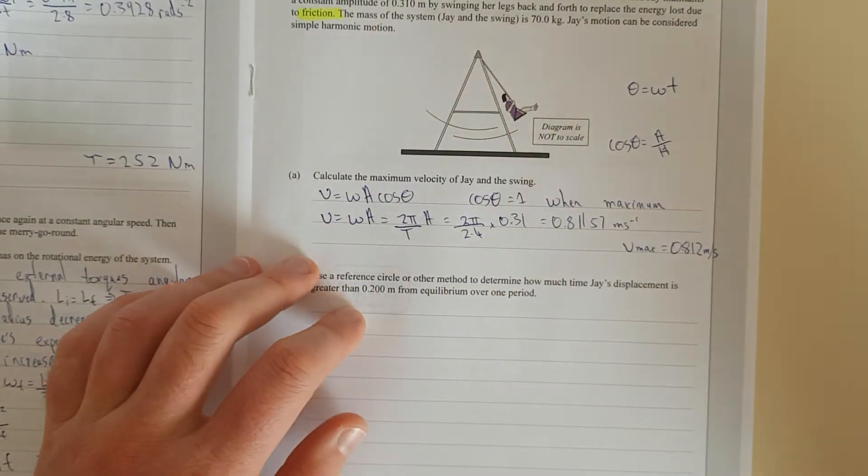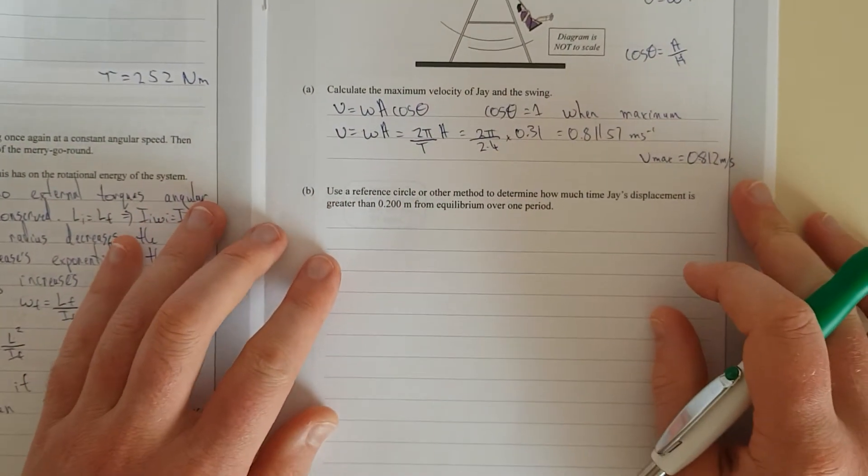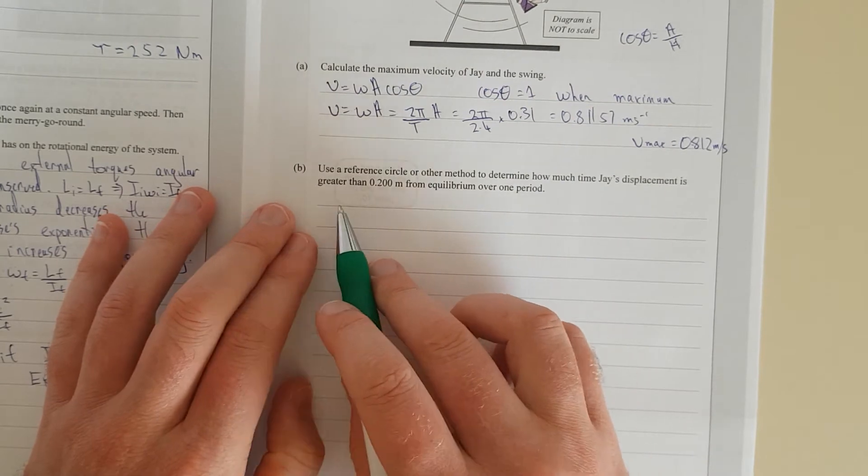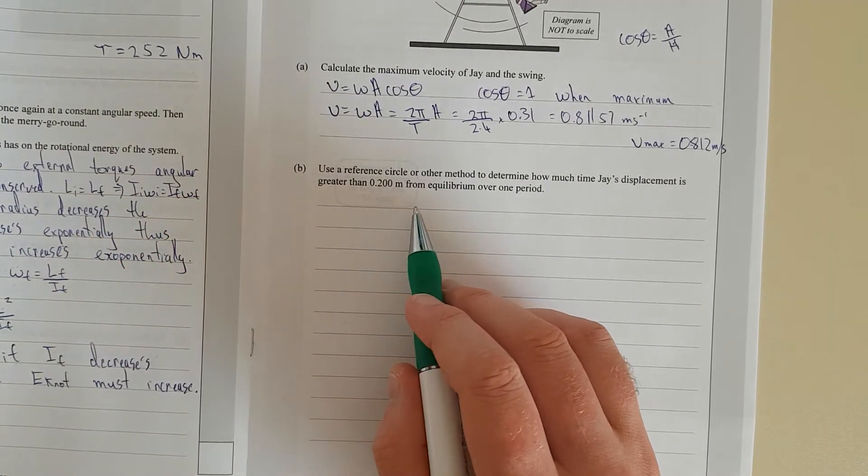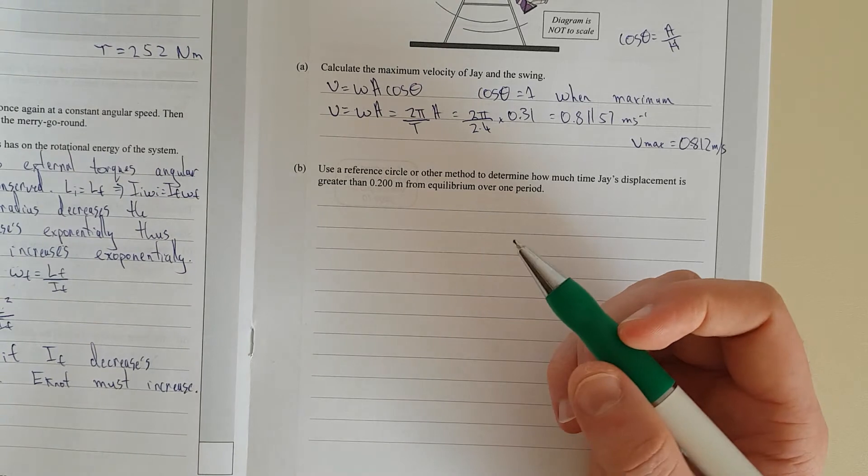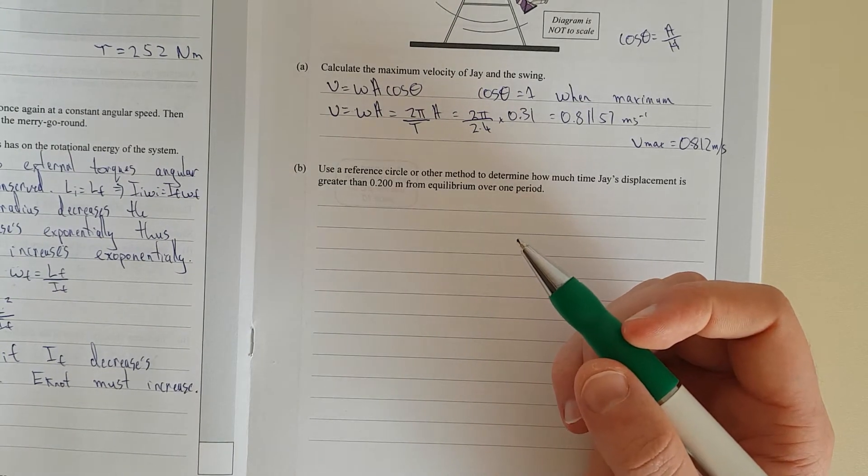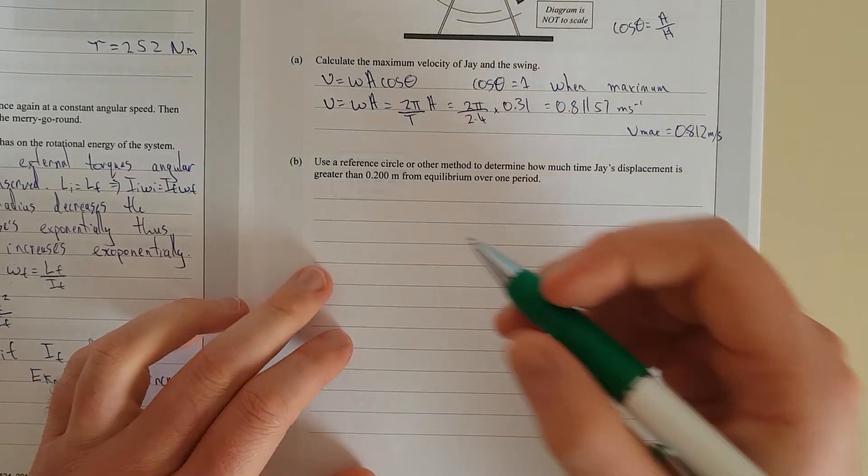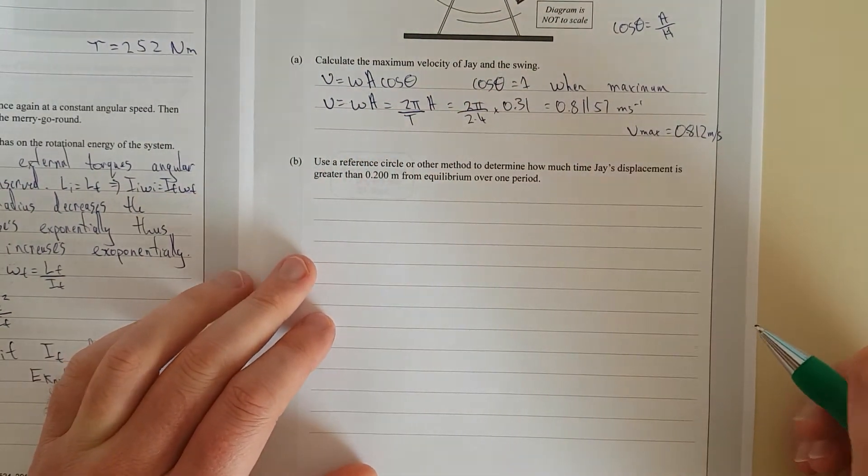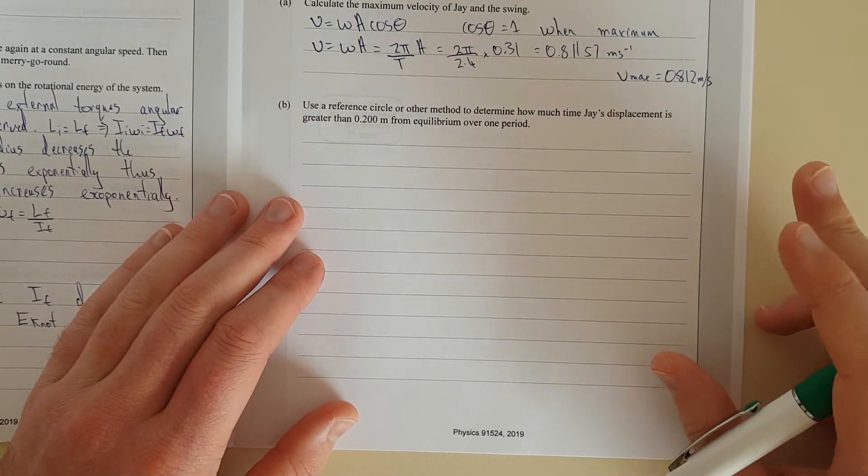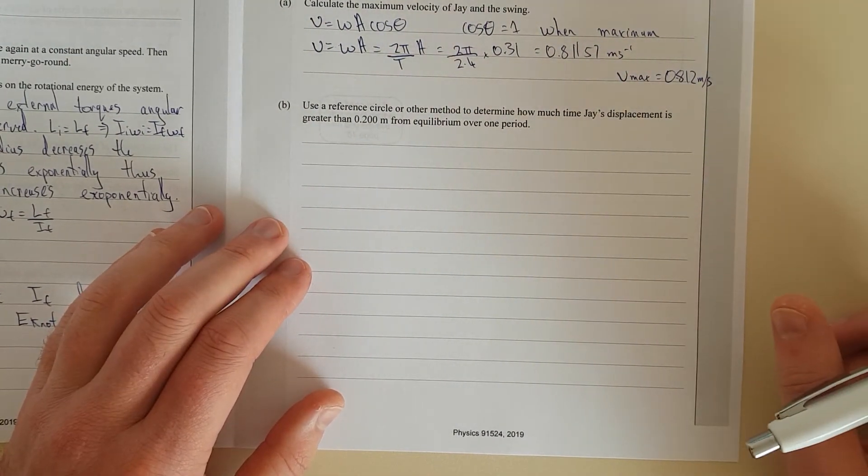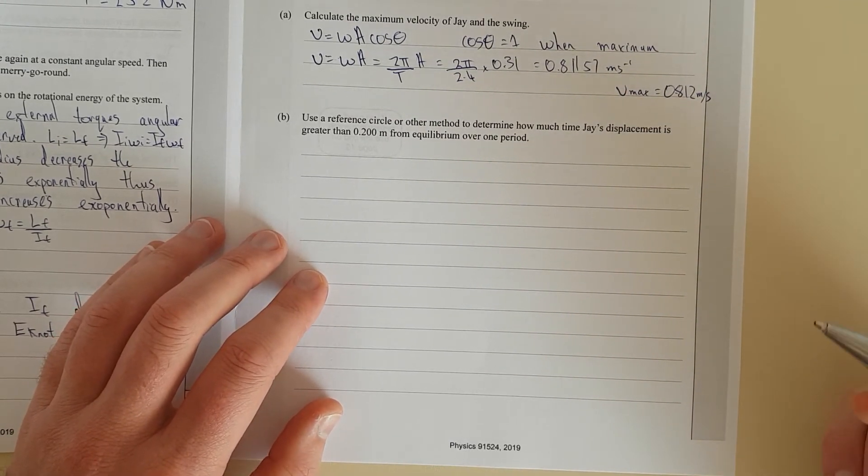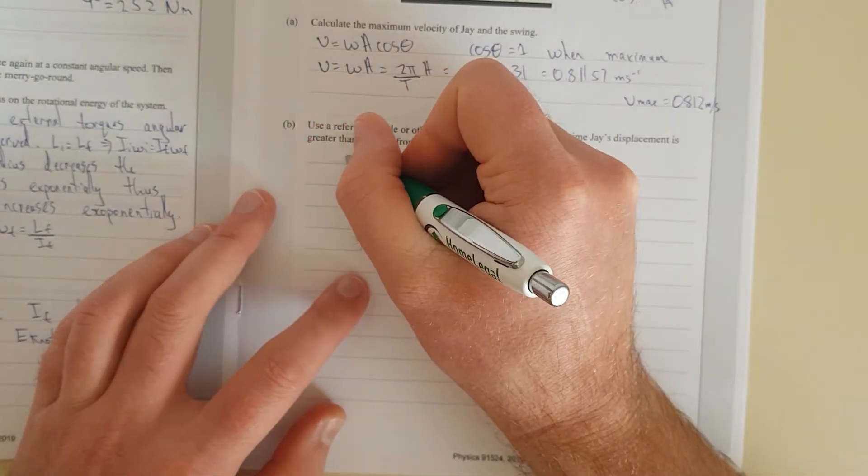And you're going to use sine or cos, because the maximum sine as well is 1. Use a reference circle or other method to determine how much time J's displacement is greater than 0.2 meters from equilibrium over one period. So, I can't find myself a protractor for the life of me. So, I'm totally going to freehand this one. I'm going to draw a phasor diagram. There are two ways to do this question. There's a really easy way, but I thought I'd do the harder-ish way first.